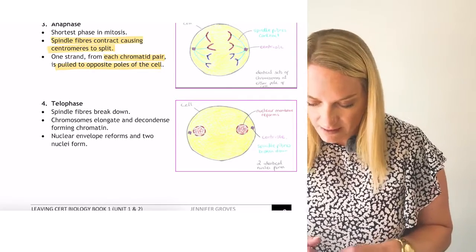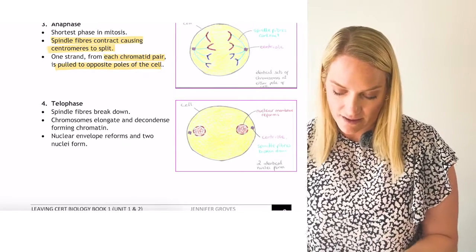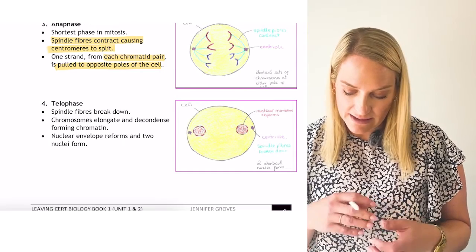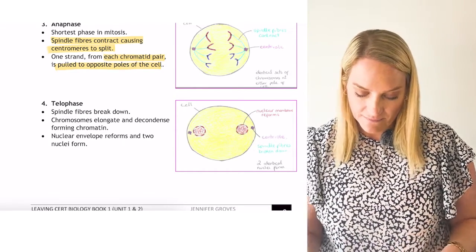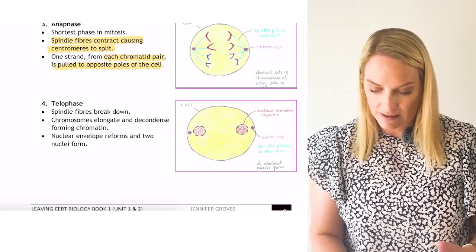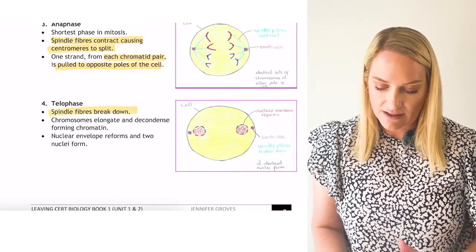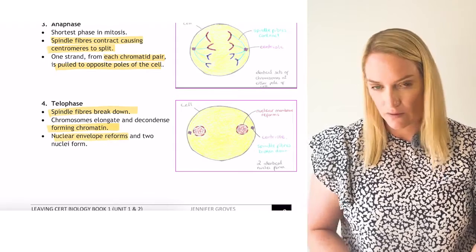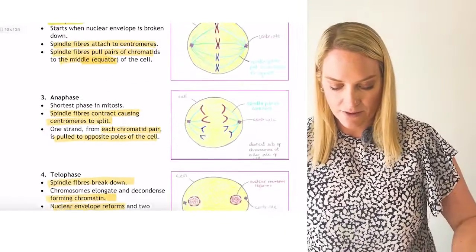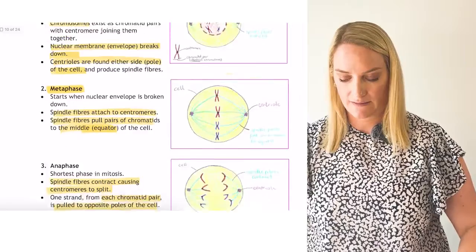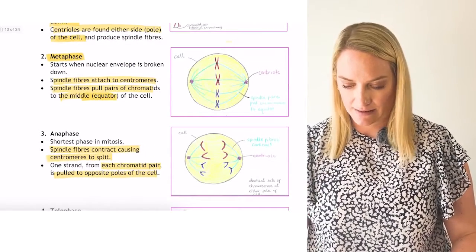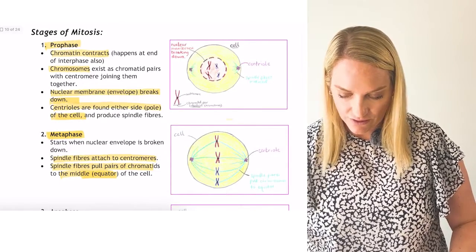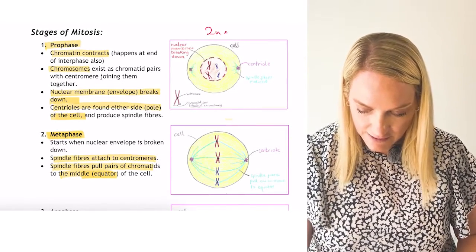In telophase, the nuclear membrane is starting to reform. Chromosomes decondense and are now visible as chromatin again. The spindle fibers have broken down. The chromosomes have elongated and formed chromatin, and the nuclear membrane has reformed. For example, if 2n equals 4, you may be asked to draw metaphase or anaphase where 2n equals 4.